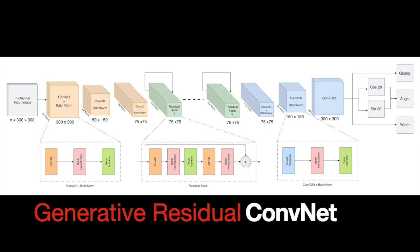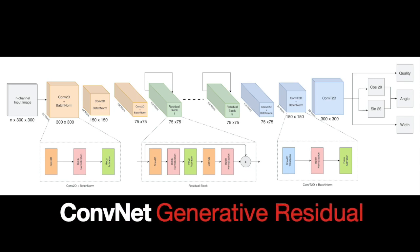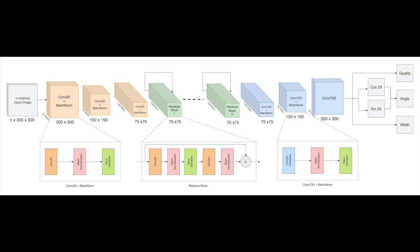This is our proposed generative residual convolutional neural network that generates antipodal grasps for every pixel in an n-channel input image.